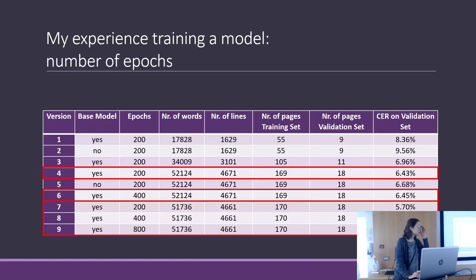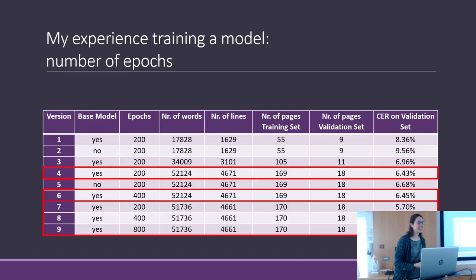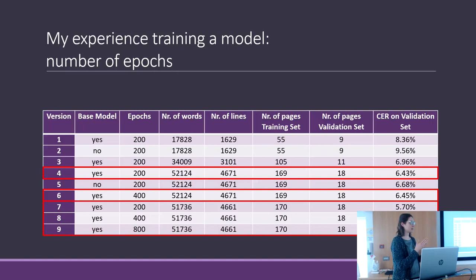Question: Can you explain again what an epoch is? An epoch is the number of times the training data is evaluated. The machine takes the training data and learns from your transcription.